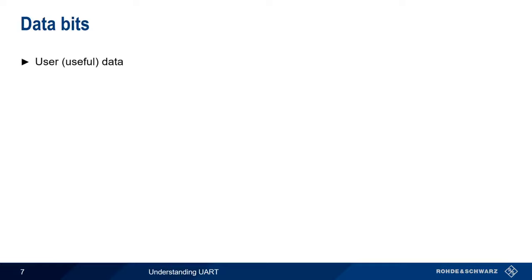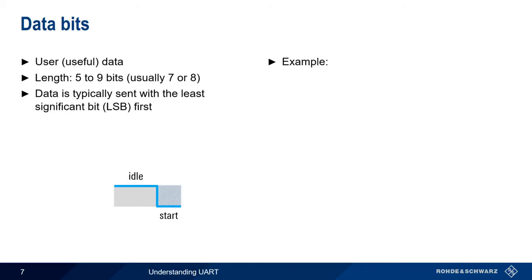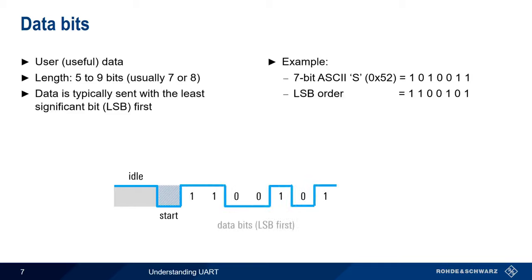The data bits are the user data, or useful bits, and come immediately after the start bit. There can be 5 to 9 user data bits, although 7 or 8 bits is most common. These data bits are usually transmitted with the least significant bit first. Let's look at an example. If we want to send the capital letter S in 7-bit ASCII, this is the bit sequence 1010011. We first reverse the order of the bits to put them in least significant bit order, that is 1100101. We then send them out. After the last data bit is sent, the stop bit is used to end the frame, and the line returns to the idle state.